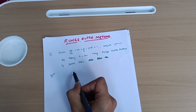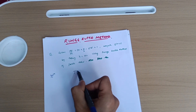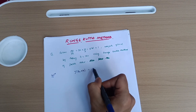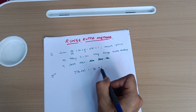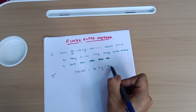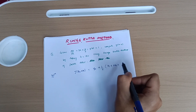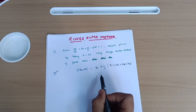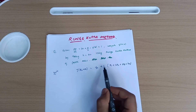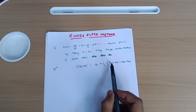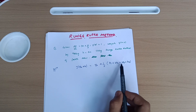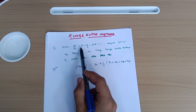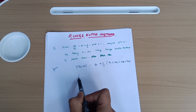Let us solve this particular question. We have the formula for the Runge-Kutta method: y(x₀ + h) = y₀ + (1/6)(k1 + 2k2 + 2k3 + k4). This is the formula for the Runge-Kutta method. The only thing is we need to determine the terms k1, k2, k3, and k4.